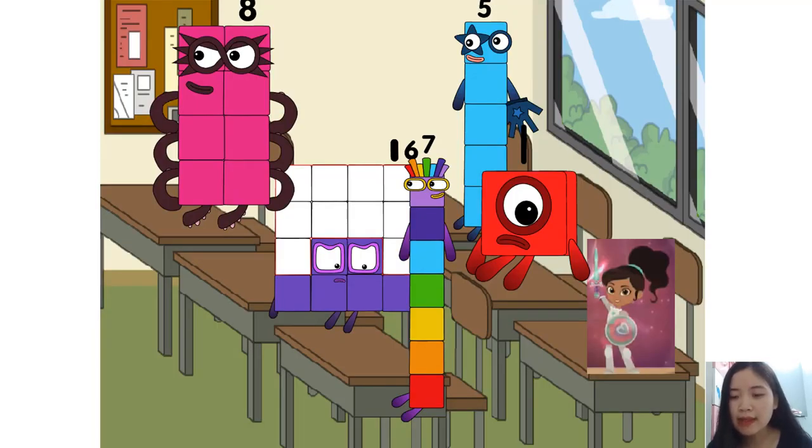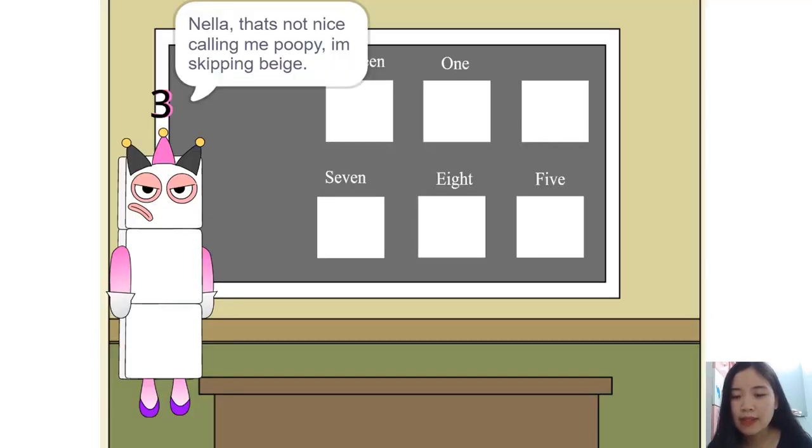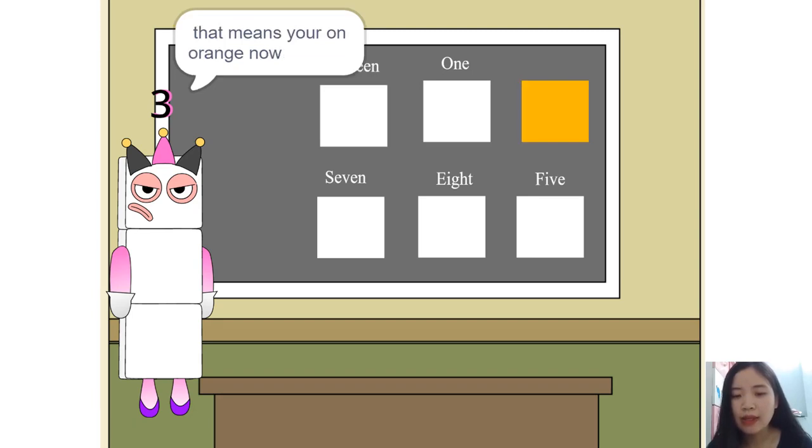We don't care. We can do whatever I want. Poopy teacher. [laughs] Nella, that's not nice calling me poopy. I'm skipping beige. That means you're on orange now. Why, you worthless teacher. [laughs]